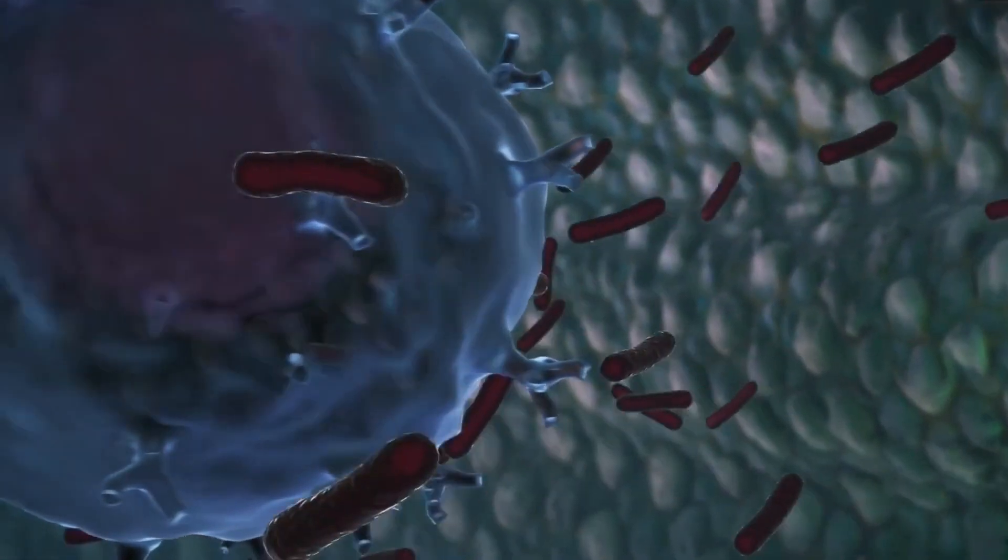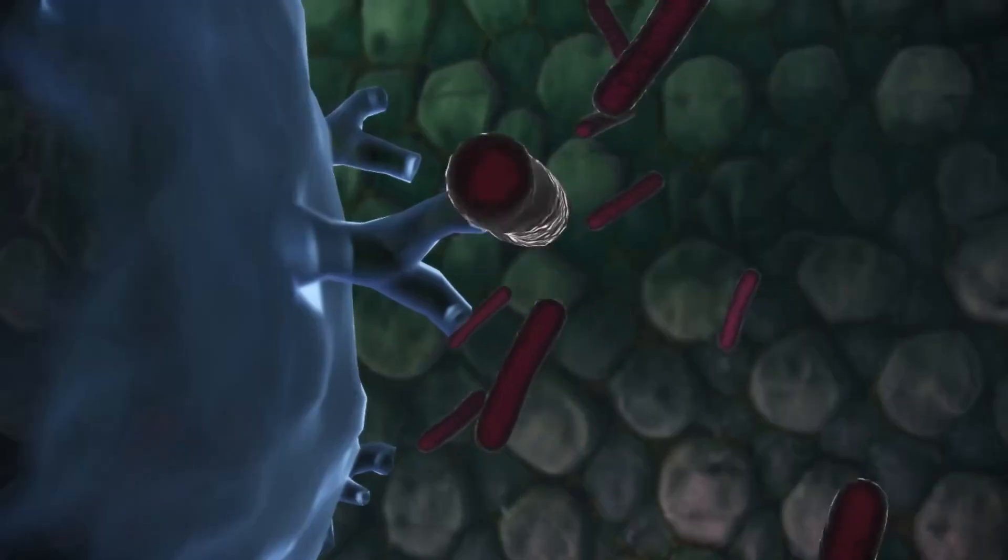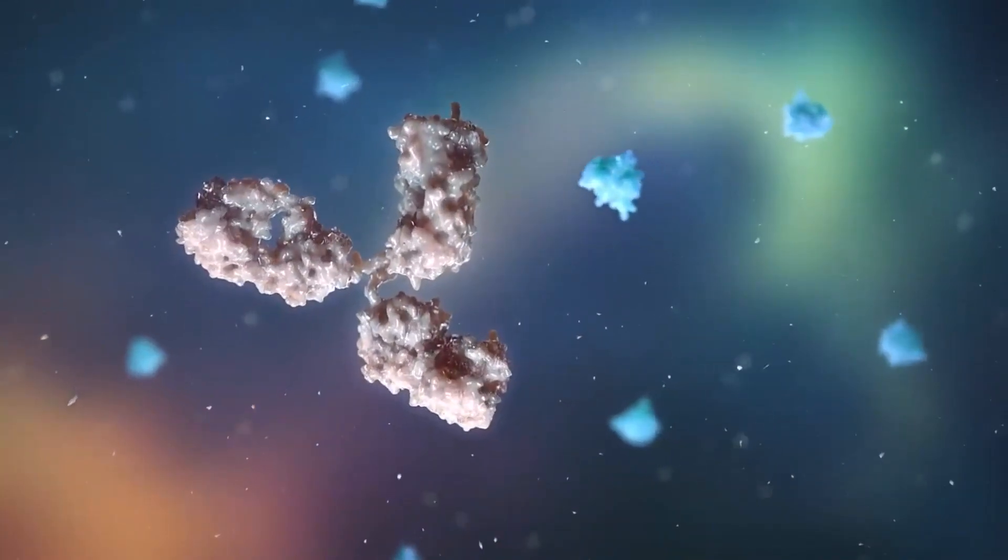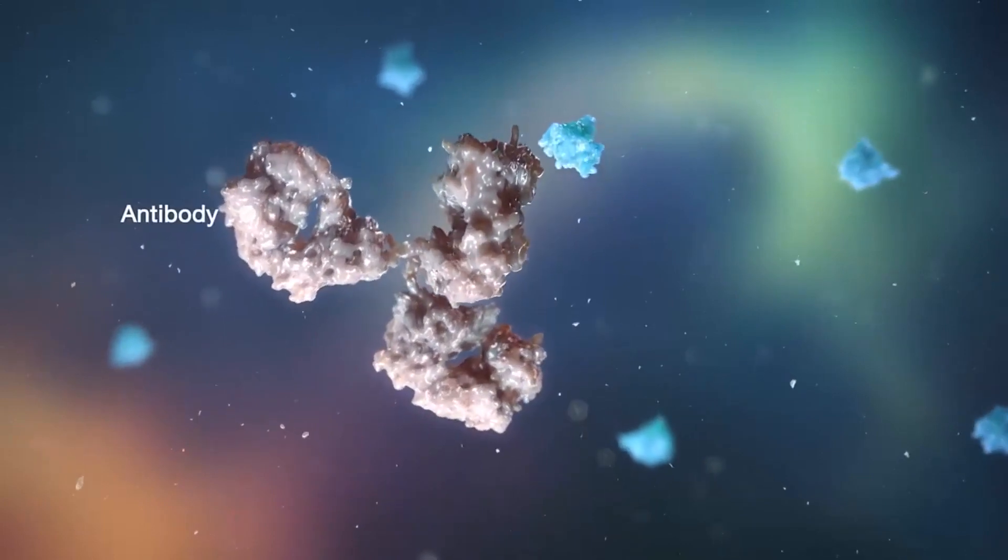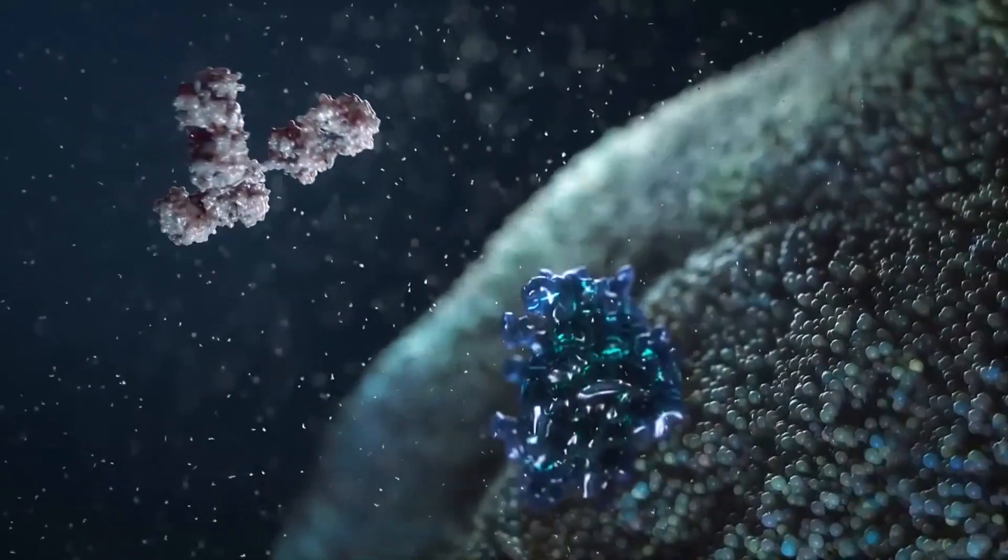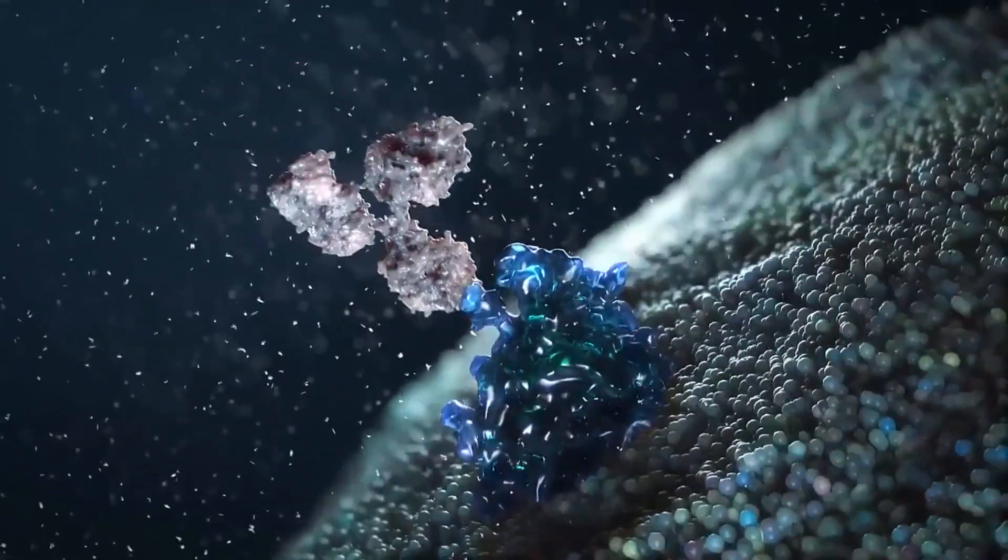These innate cells present the characteristics of the threat to B cells, which in turn create antibodies. Antibodies are like wanted posters floating through your immune system looking for the characteristics of a particular threat.